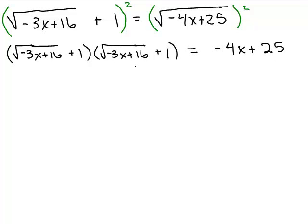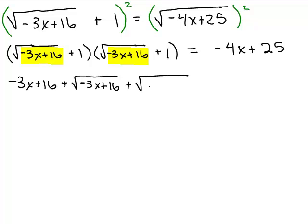On the left side, if I do the FOIL method, the first terms squared give me what's under the square root sign, which is negative 3X plus 16. The outer term gives plus square root of negative 3X plus 16, and the inner term gives another square root of negative 3X plus 16. The last term is 1.